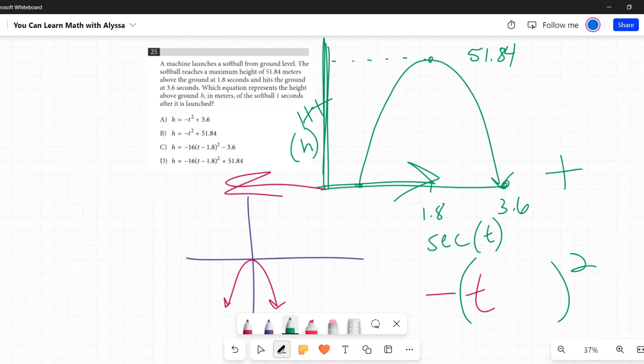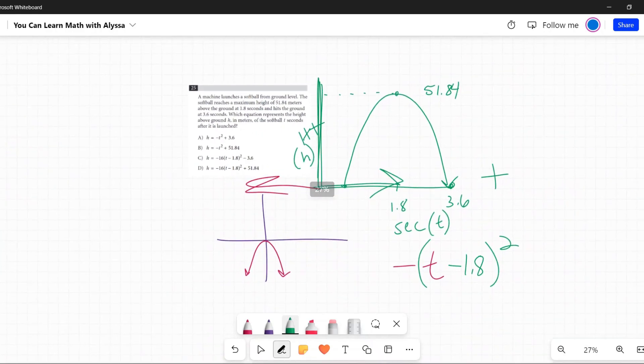It goes toward the positive x, so you need to do the opposite, minus 1.8. And then what happened? It goes up 51.84.